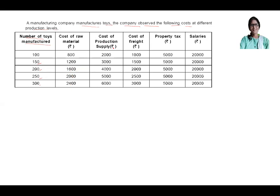Cost of production supply in rupees is 2000 for 100 toys, 3000 for 150 toys, 4000 for 200 toys, 5000 for 250 toys and 6000 for 300 toys. Cost of freight in rupees: 1000 for 100, 1500 for 150, 2000 for 200, 2500 for 250 and 3000 for 300.